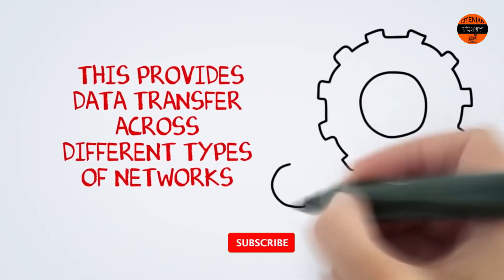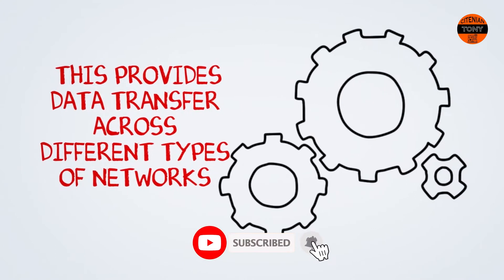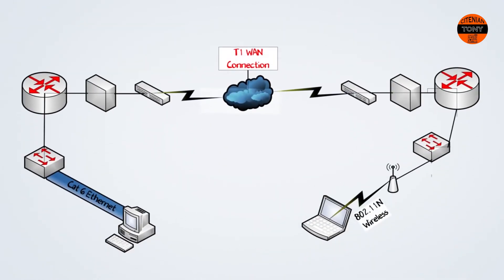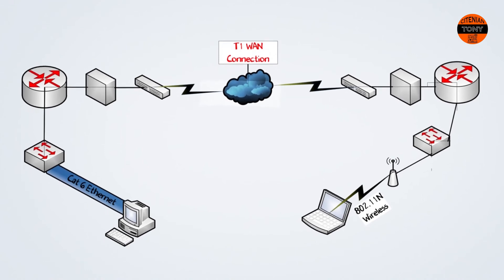Once data packets are properly formatted into frames, they can travel along various network topologies that use a variety of protocols. As data travels across the network, it will encounter different hardware devices as well as networking protocols. The data link layer is not only responsible for formatting data and sending it out, but also reads and reformats it into new frames as it crosses different devices.